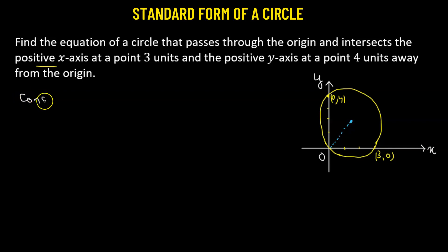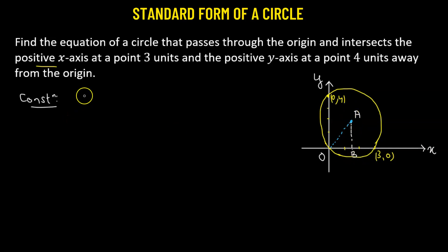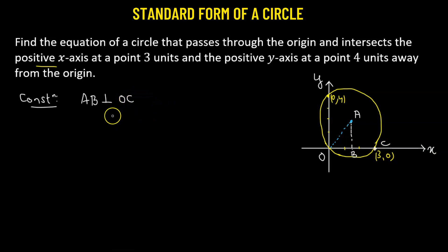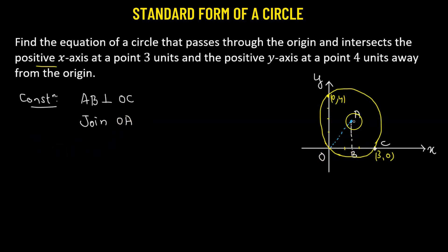We'll do a couple of constructions here. We will name the center as A. We're going to drop a perpendicular from the center to the positive x-axis and we'll call it AB, so AB is perpendicular to the line. Let's say this point is C, so AB is perpendicular to OC. We will join OA and this gives us the radius. We will then find out the values of OA, OB, and AB.